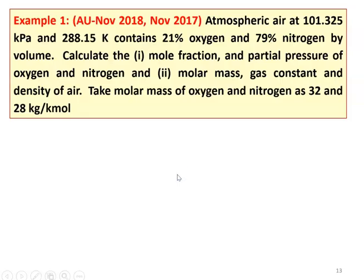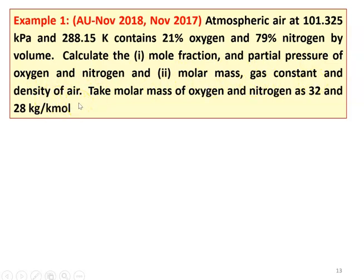In example number 1, from November 2018 and November 2017 question papers: Atmospheric air at 101.325 kilopascal and 288.15 Kelvin contains 21% oxygen and 79% nitrogen by volume — the standard atmospheric pressure and temperature. Calculate the mole fraction, partial pressure of oxygen and nitrogen, molar mass, gas constant, and density of the air. Take the molar mass of oxygen and nitrogen as 32 and 28 kg per kg-mole respectively.